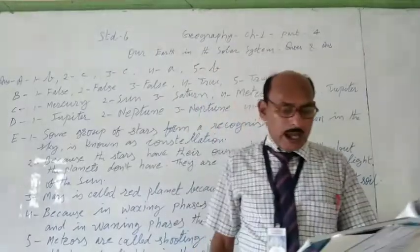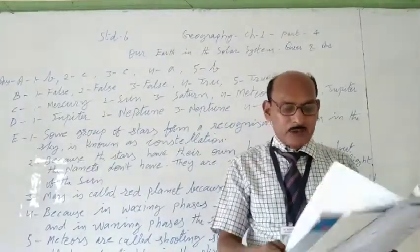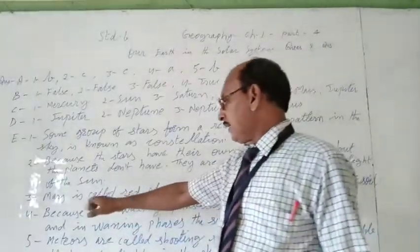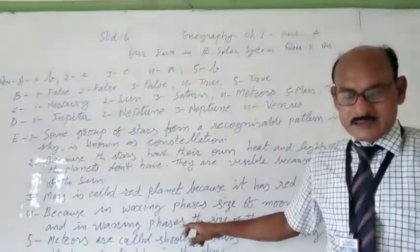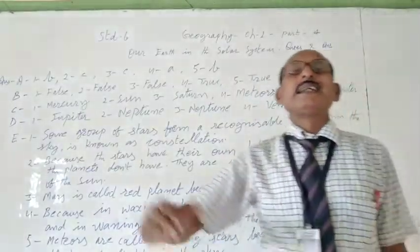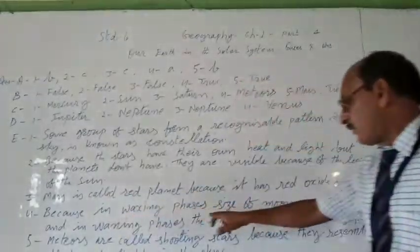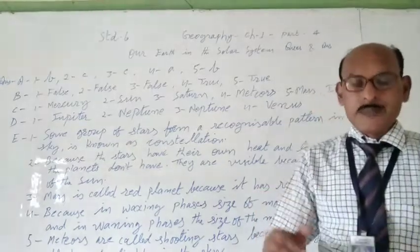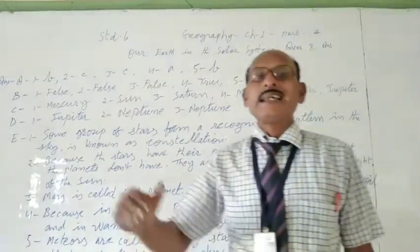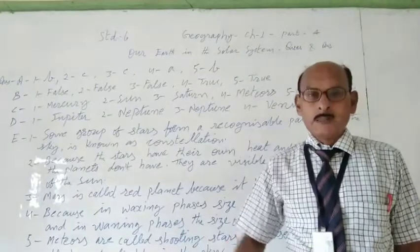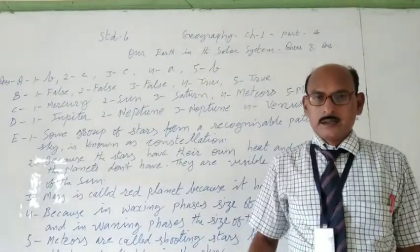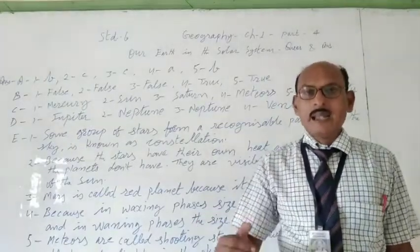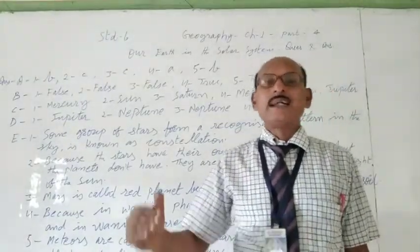Fourth, how is the waxing phase of the moon different from its waning phase? So the answer is, because in waxing phase, the size of the moon increases. In waning phase, the size of the moon decreases.